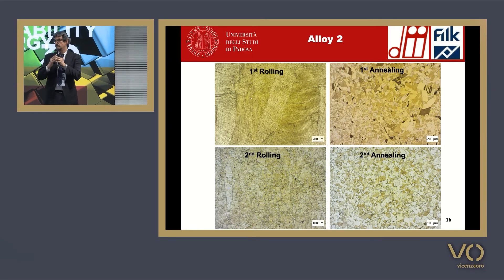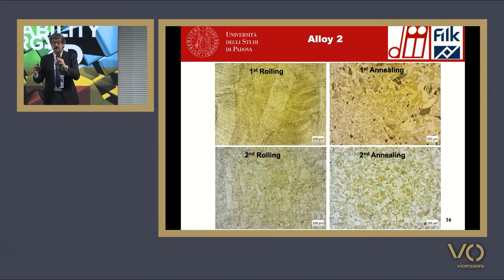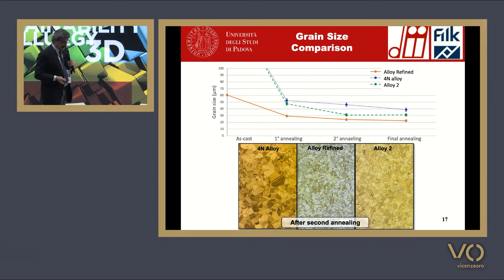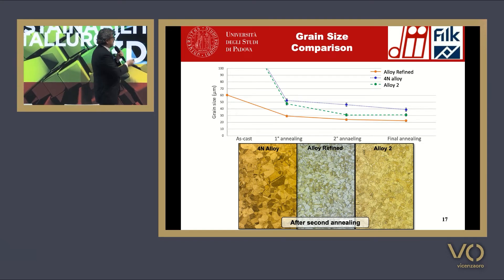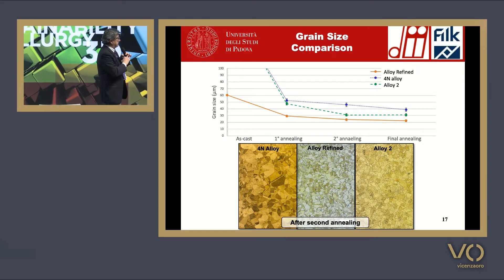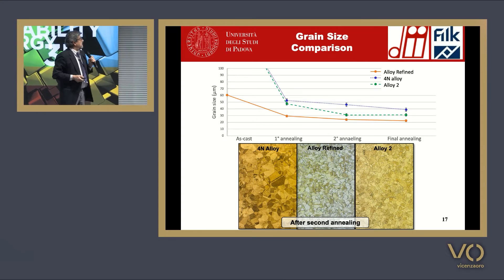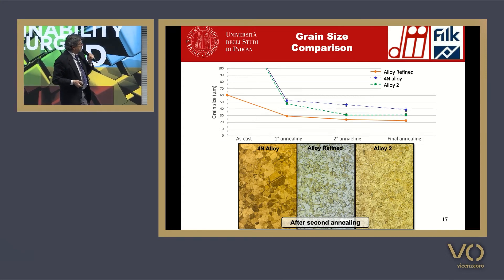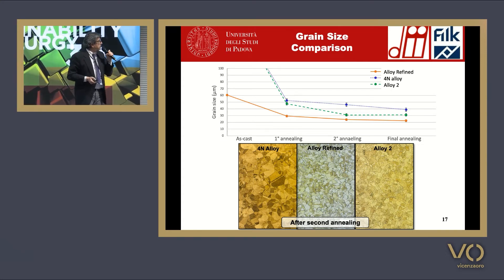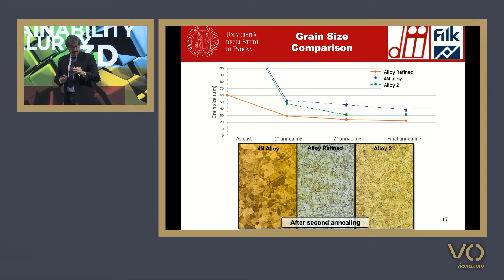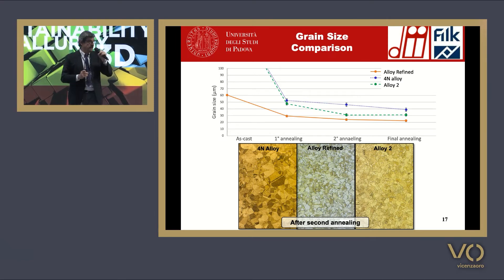In the whole production process, it is very important to control the steps of annealing and rolling, because if you control these steps, you can obtain very high surface quality and high mechanical properties of the alloy. In our work, we used as a reference alloy an 18-carat alloy containing 0.05% of iridium. We compared this alloy with similar alloys — one where the iridium is completely removed.